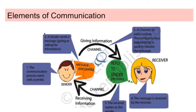If we are talking online - via WhatsApp, email - then our channel is no longer air; it becomes digital. So the channel changes accordingly. That means the elements of communication are: one - sender, two - message or information being sent, three - channel (which can be air or digital), and four - receiver, who understands our message.